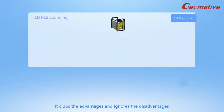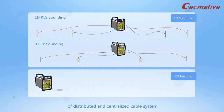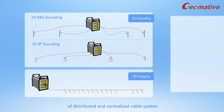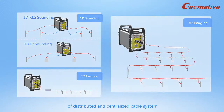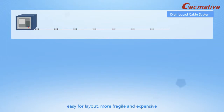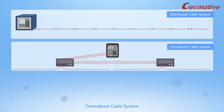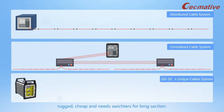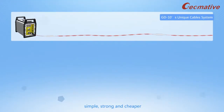It combines the advantages and ignores the disadvantages of distributed and centralized cable systems. Distributed cable system is easy for layout but more fragile and expensive. Centralized cable system is rugged and cheap but needs switch tires for long sections. Hence, GD-10's ERI cable system is unique, simple, strong, and cheaper.